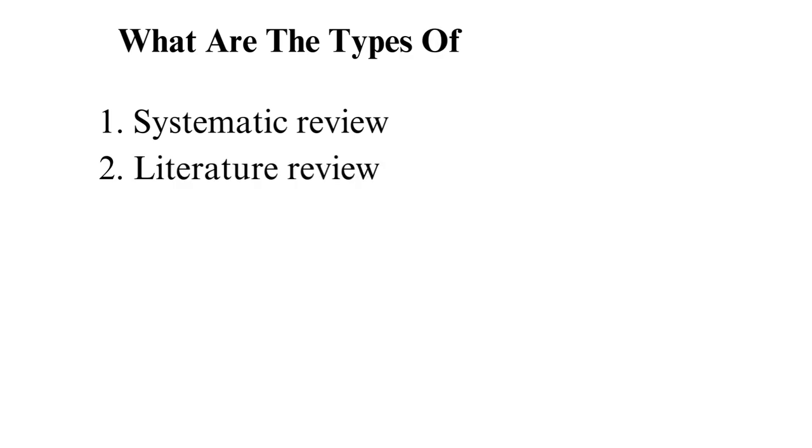What are the types of article reviews? There are three main categories of article reviews depending on the purpose they accomplish. They are: one, systematic review.